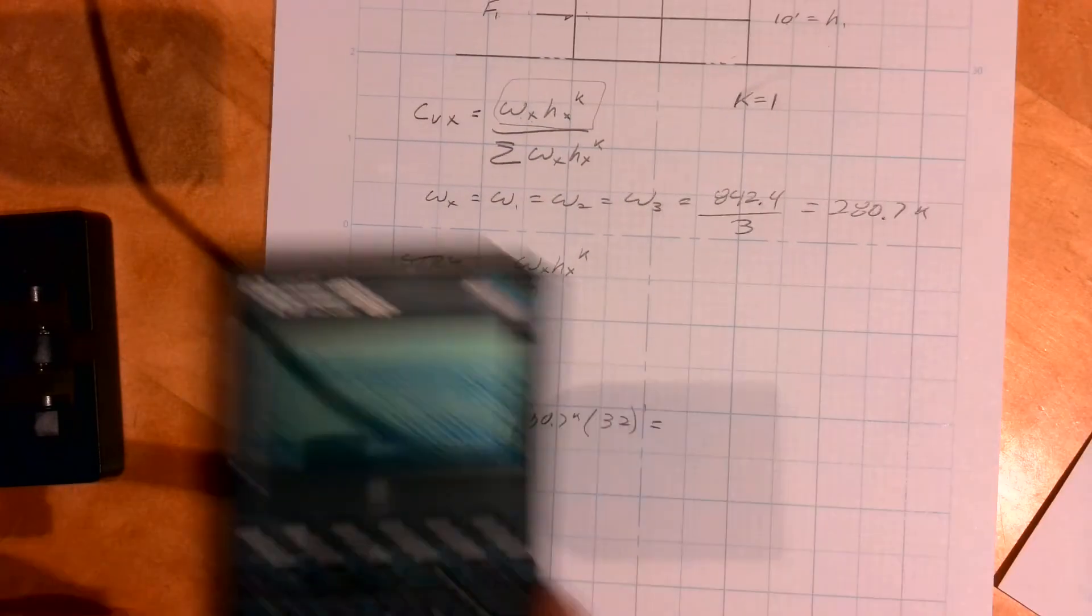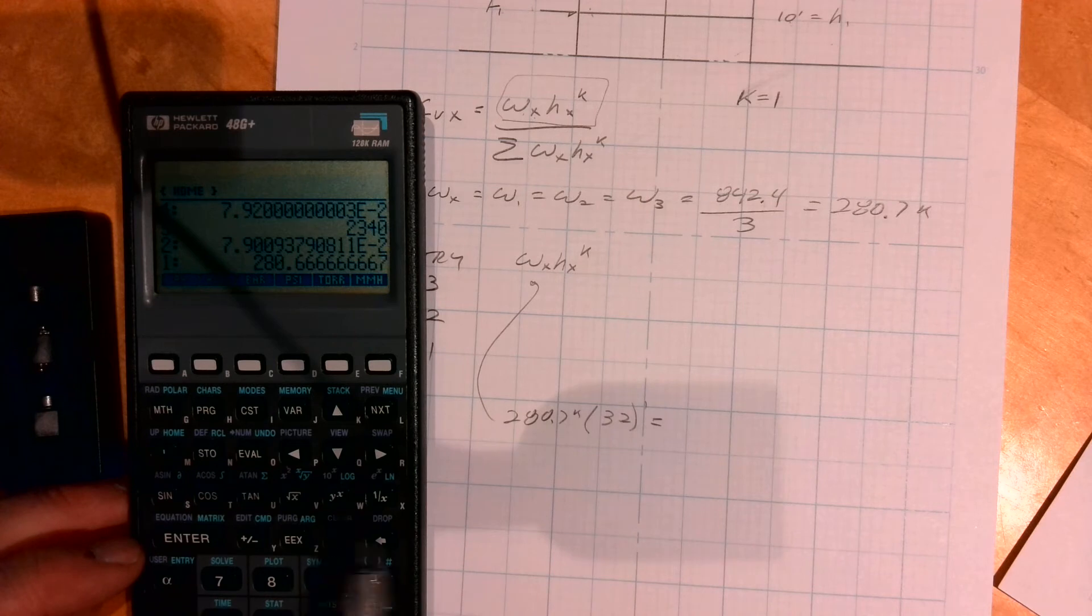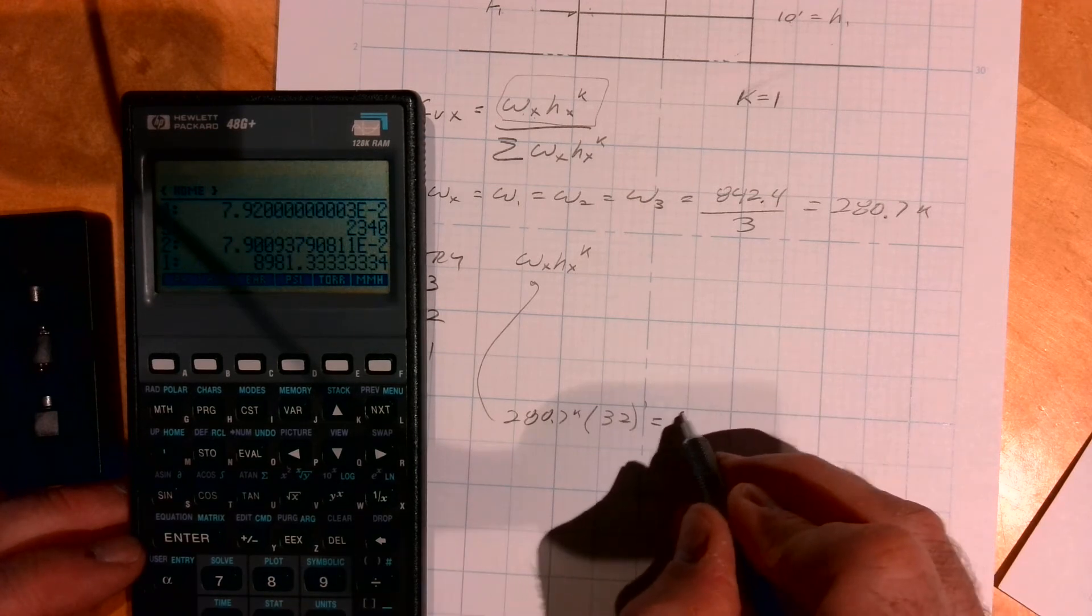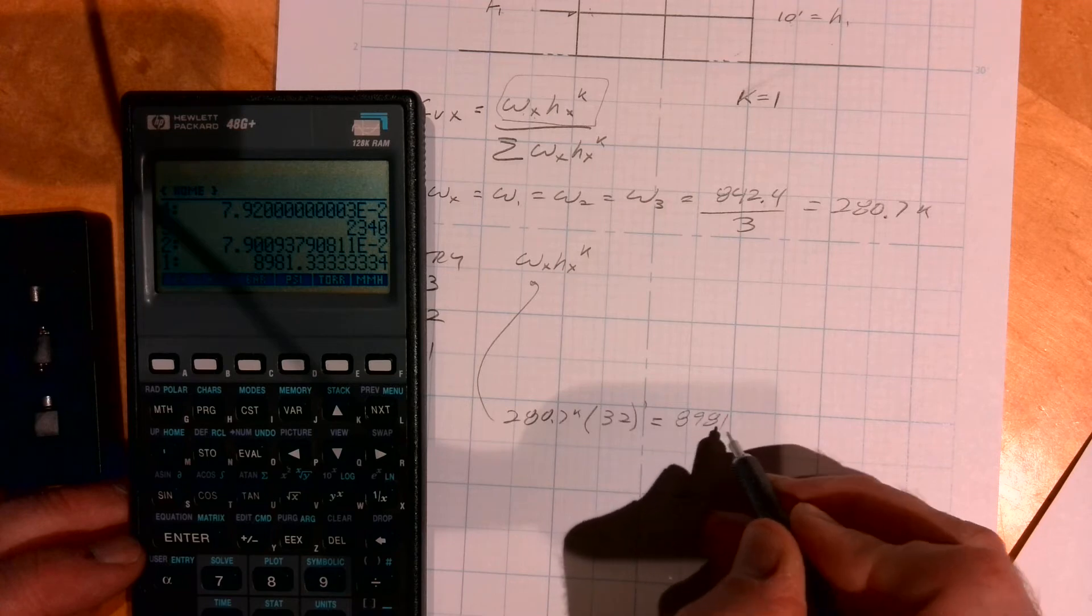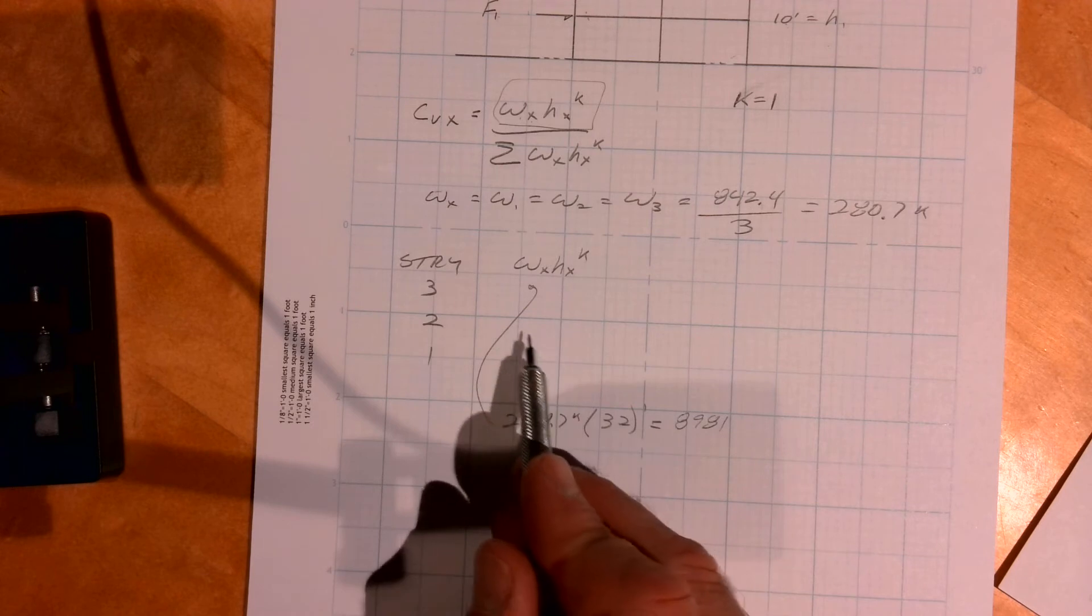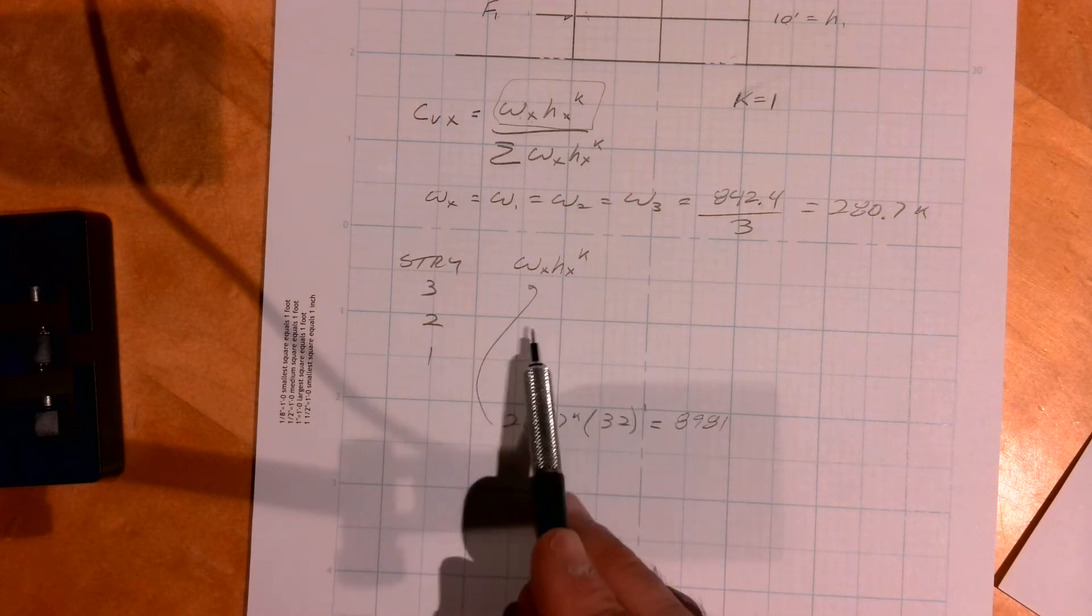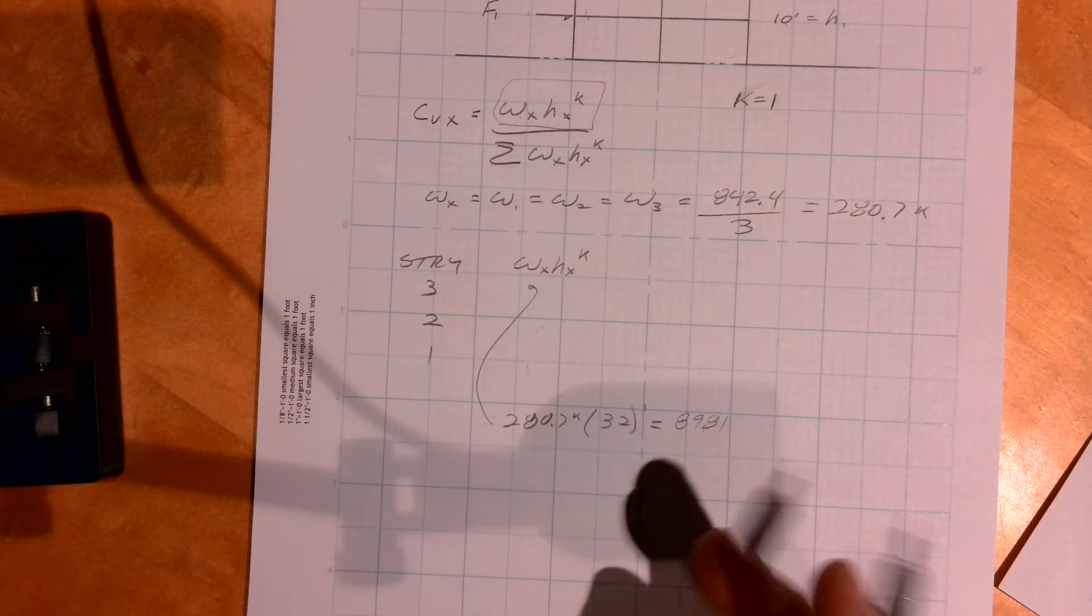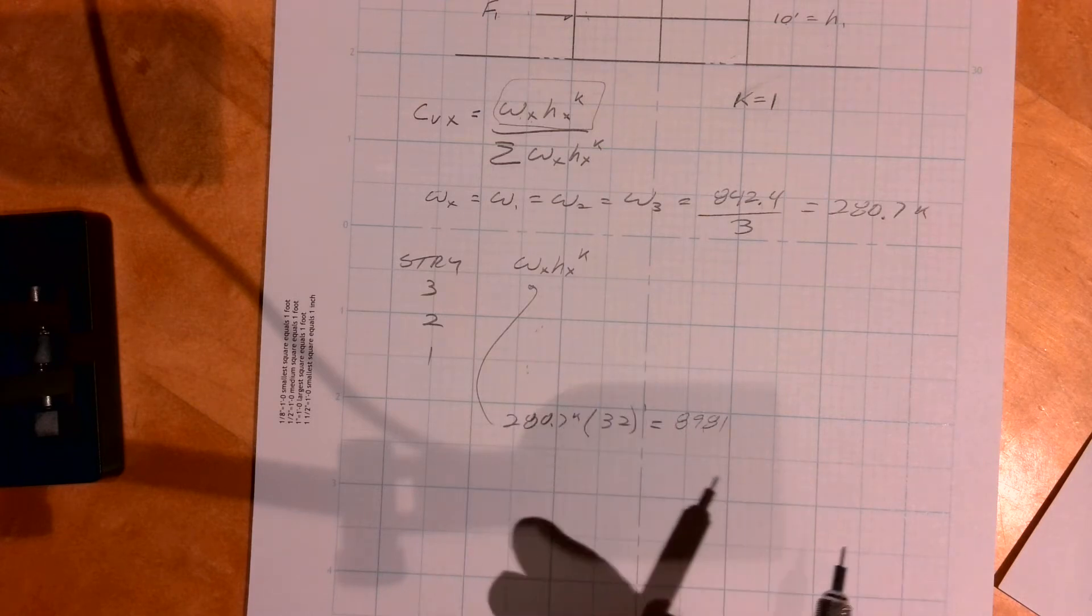And then we just do that. So I already have the 280 in there times it by 32, 8981. So I'm going to keep doing this for each level. So I'm going to have a calc for this, a calc for this. These numbers are going to be somewhat less than that, so I'm going to go ahead and do that off screen.